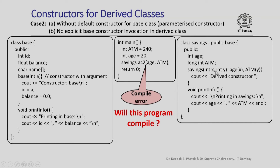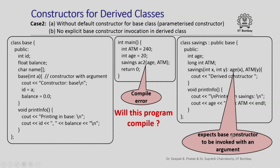The constructor of the derived class needs to invoke the constructor of the base class, but I have not specified how to provide the argument to the base constructor, and the base class does not have a default constructor. Therefore the base constructor cannot be invoked and I will get a compile-time error. The initialization lists shown are only for the derived class data members — it is not specified here how to invoke the base constructor.